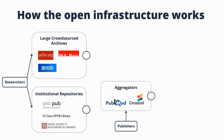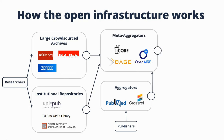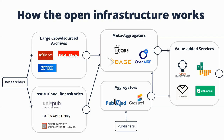All these archives, repositories, and aggregators have open interfaces so others can reuse this data. Meta-aggregators like CORE, BASE, and OpenAIRE take advantage of this, crawling all this information into huge indices. These indices can then be reused by value-added services — Open Knowledge Maps is one, but there are others like Refigure, which lets you take figures from different papers into new contexts; Unpaywall, which provides data on open access articles; and ContentMine, which structures article content to find relevant entities for search and discovery.